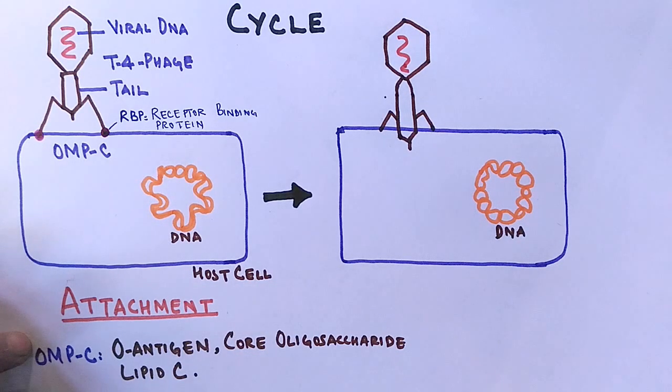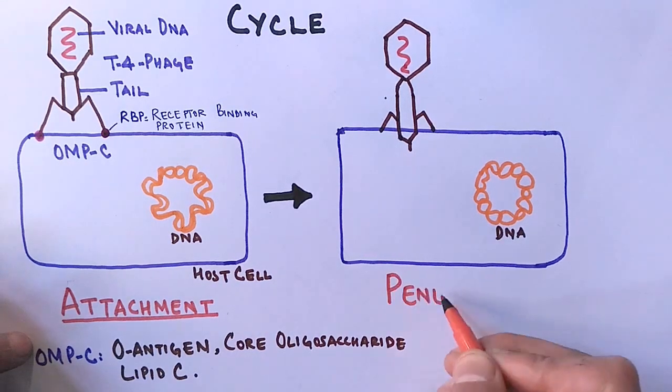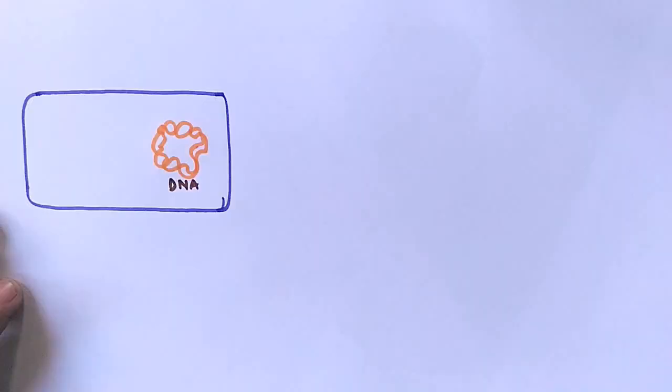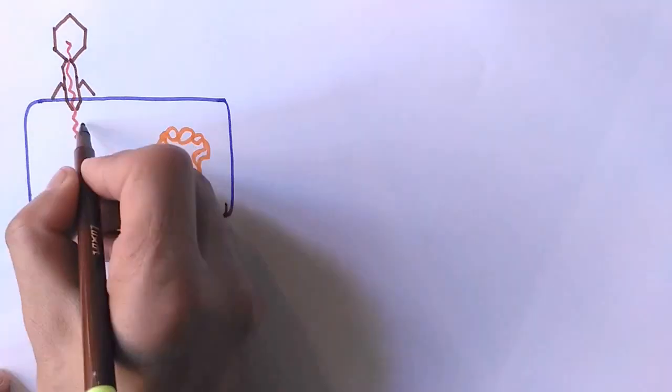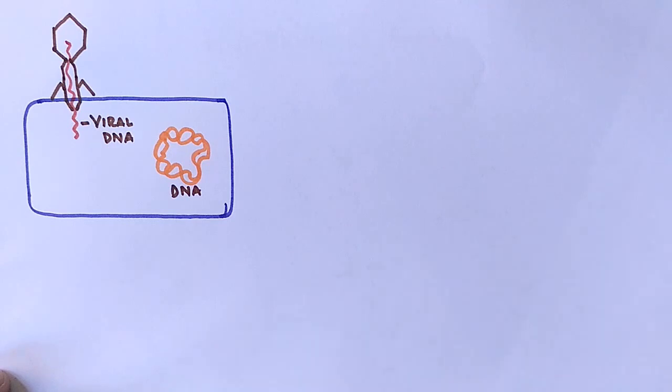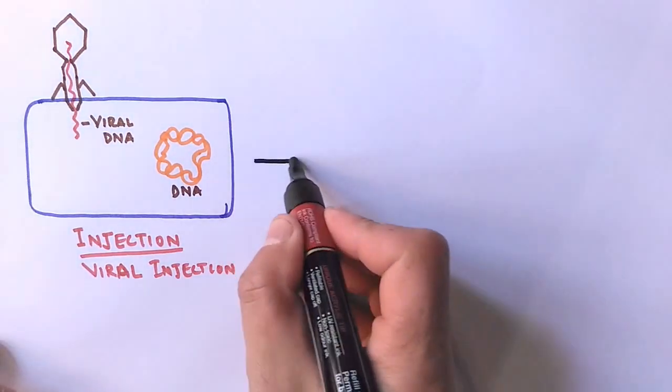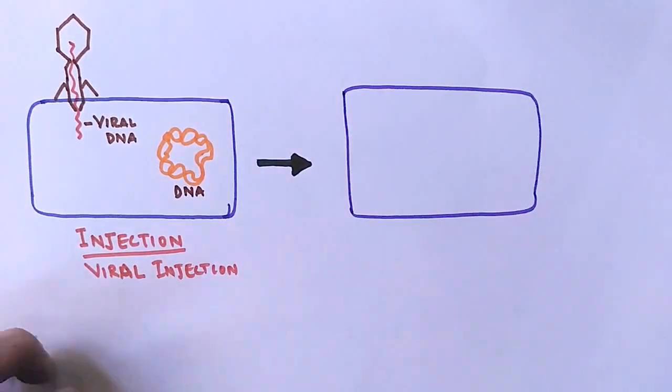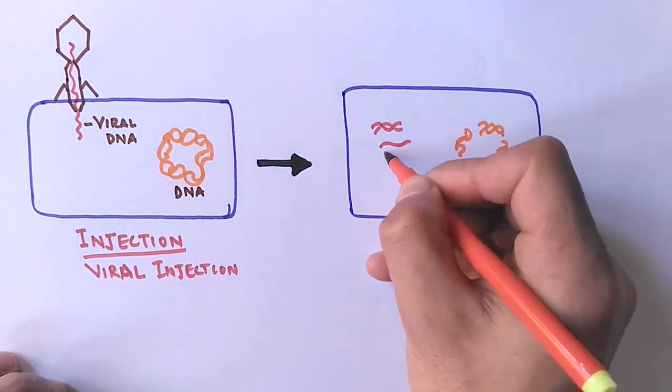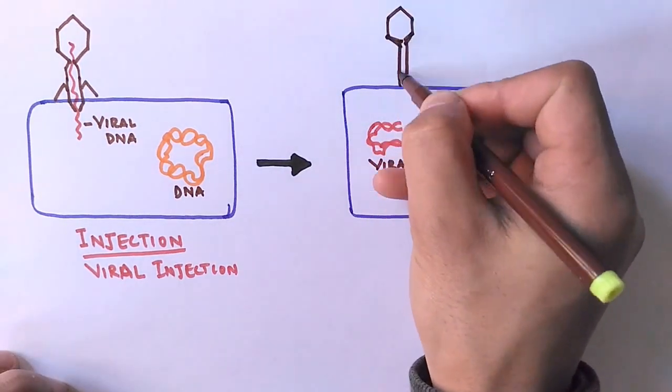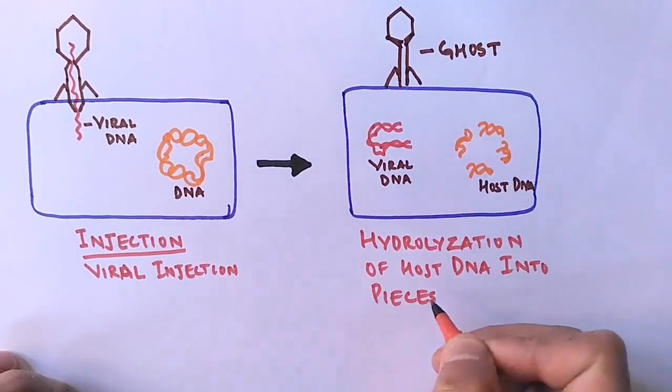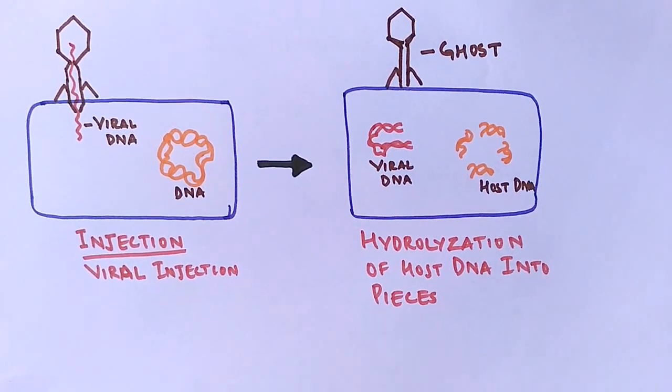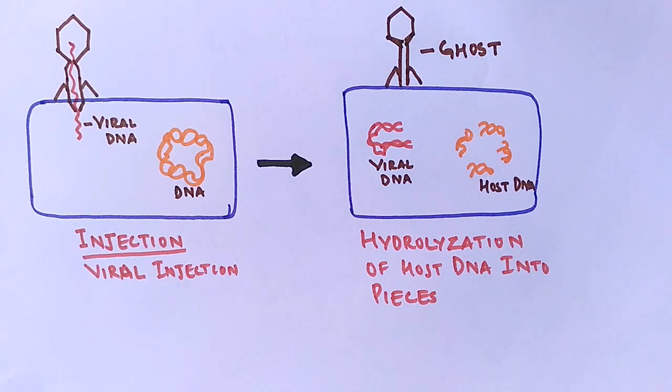In the proceeding step, the viral DNA from the head of this T4 phage gets transported, gets injected into the host cell by using the ATP present in the tail. So this whole process where the viral DNA gets injected into the host cell by using the ATPs from the tail is called viral injection. After the viral injection, the next step proceeds with the hydrolysis of host DNA into pieces. The host DNA gets degraded into pieces, and the virus component that remains outside of the cell is termed as ghost because it's without the viral DNA.